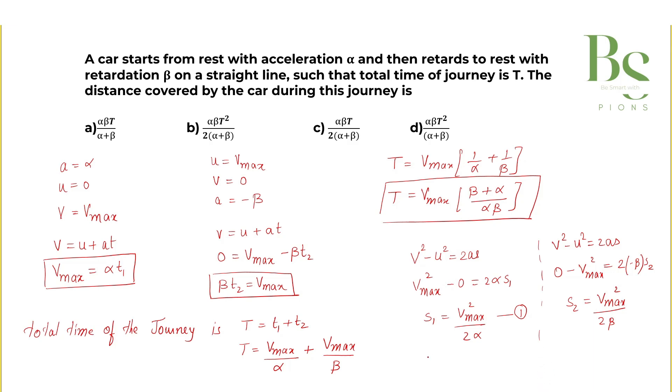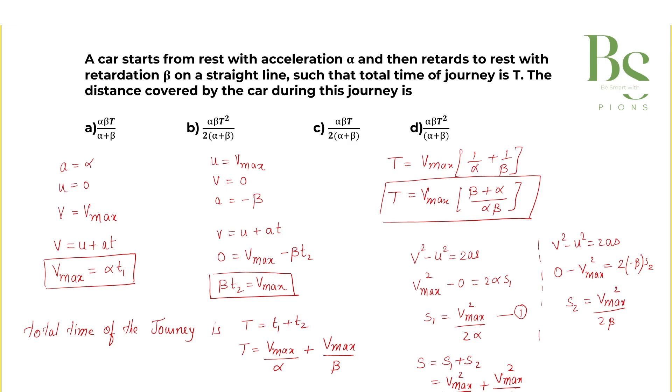So what will be the total distance now? Our total distance will be S equals s1 plus s2. And what is s1? V_max squared upon twice of alpha plus V_max squared whole divided by twice of beta. Now we can take V_max squared common. So total distance will be V_max squared common, and what we left with is 1 by 2 alpha plus 1 by twice of beta. And now what is V_max? V_max from our previous equation we can substitute here in terms of T.